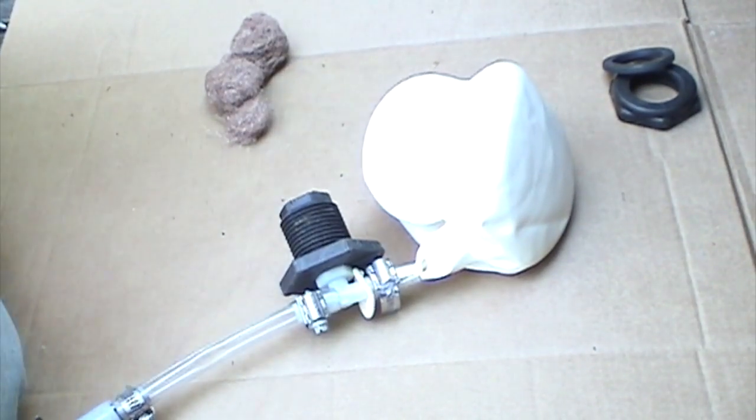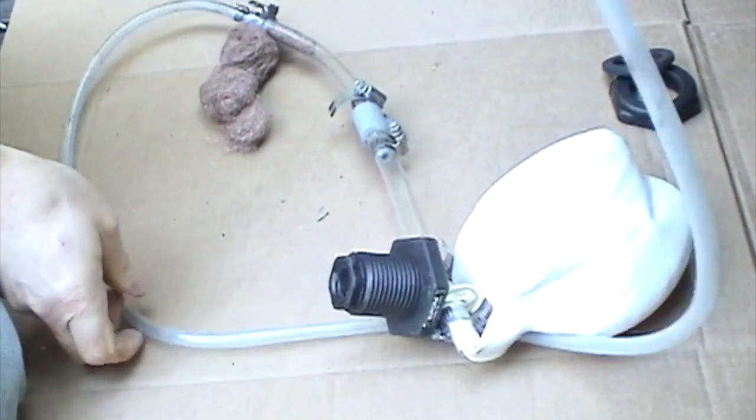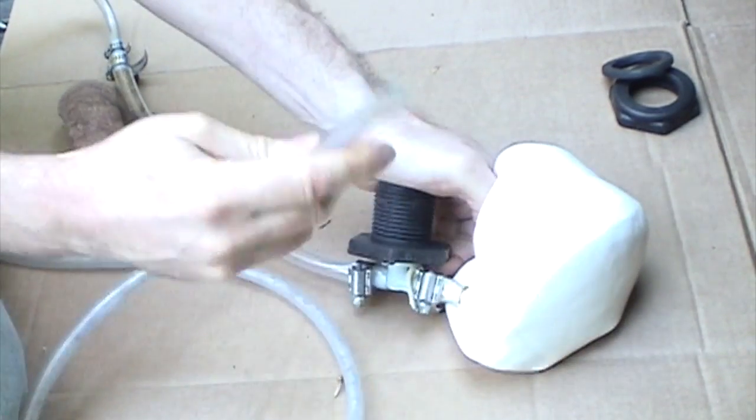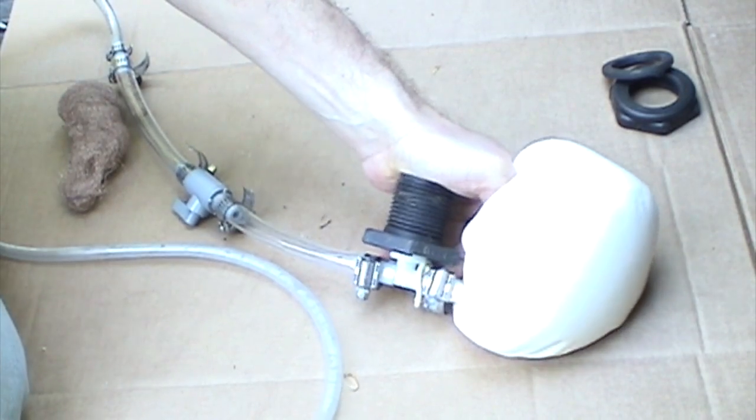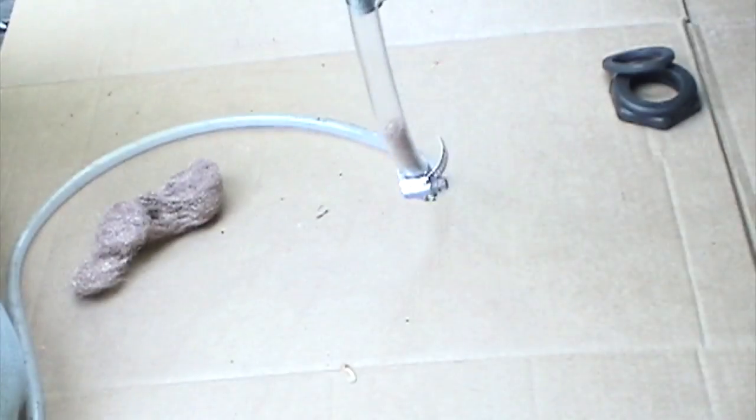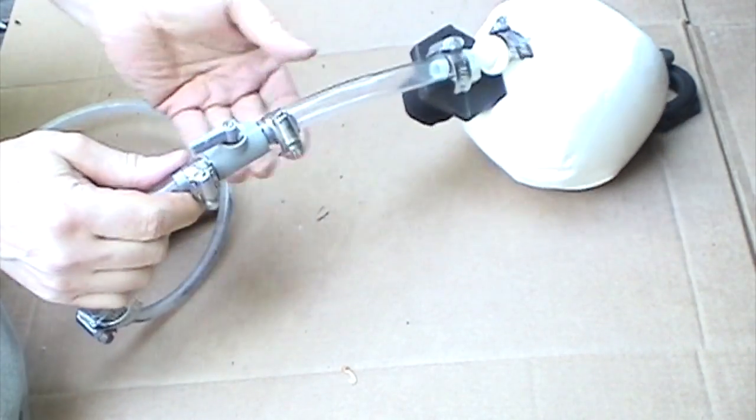Next thing you want to do is test this whole system for air tightness by capping this with your hand and then blowing into the quarter inch hose. And there's a leak in here so I'll go around and tighten up all my connections.